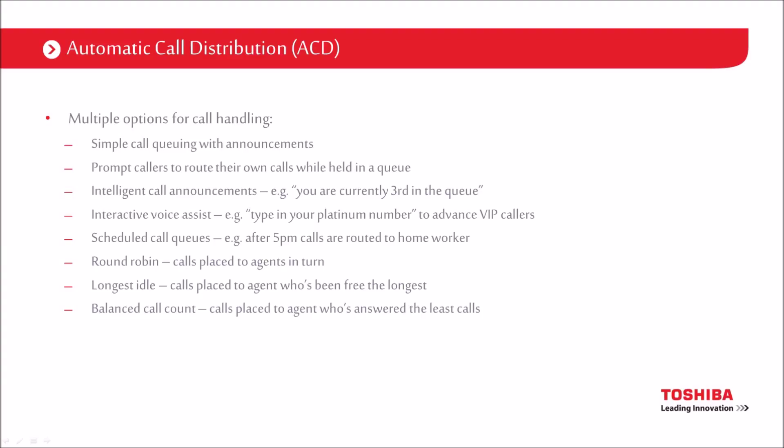What ACD can do is start doing a number of clever things. We can do simple call queuing. We can do three levels of announce — so when you come into the queue, first you get the first announce; if you've been in the queue for a period of time, you get the second announce; and we can do a third announce, perhaps 'we're extremely busy today', if they've been waiting for an extremely long time.